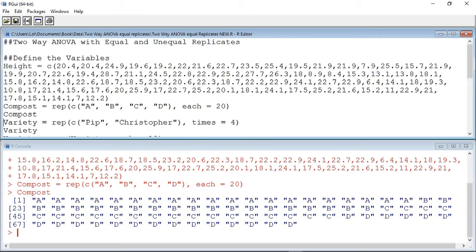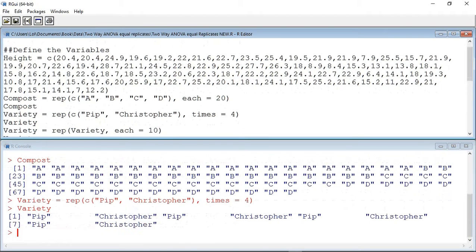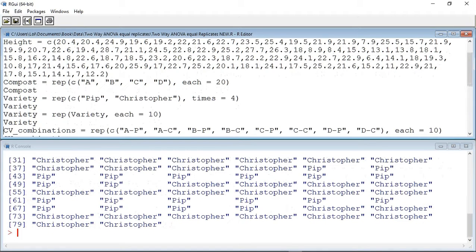The variety variable is a little bit more difficult. In order to create this variable, we're going to have to use rep twice. The first use of it creates a variable where Pip and Christopher are repeated four times. As such, the first Pip and Christopher will belong to compost A, the second to compost B, and so on. However, there are 10 data points related to compost A and Pip, and 10 data points related to compost A and Christopher, and so on. I now need to amplify the Pips and the Christophers 10 times. I'm going to do that with the second command, where the rep command is given the variable variety, the each attribute tells it to take every variable entry and repeat it 10 times. The result looks like this. This way is far more preferable than entering Pip 10 times followed by Christopher 10 times and repeating that another three times for the other three composts.